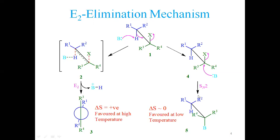Because elimination produces more products than substitution, the entropy of the system is larger for elimination, giving a more negative delta G, which favors elimination thermodynamically. The difference in delta H between the two pathways also matters — if delta H is comparable, the reaction may be reversible. High temperature and use of a good base that is a poor nucleophile both favor elimination over substitution.